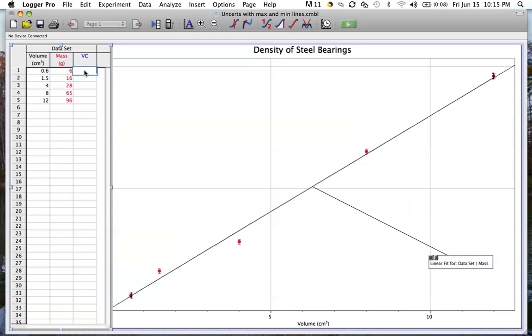Now I'll just expand that out and move over so that I can see my volume and now my volume uncertainties. Here for this, my uncertainty was plus or minus 0.5 for the next two, and it was plus or minus 1 for the last one.